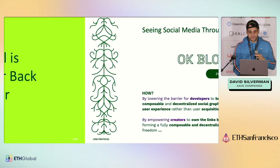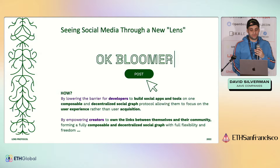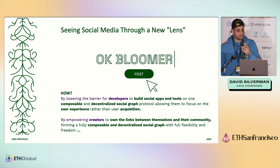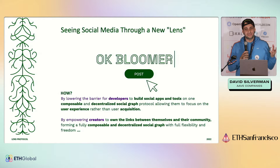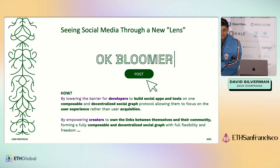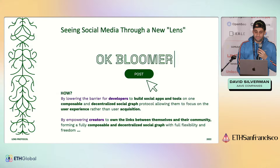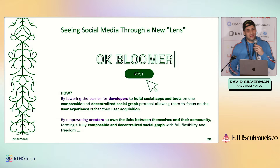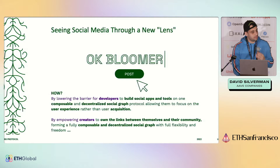In sum, Web3 Social is about bringing power back to the user. We're lowering the barrier for developers by making it easy to build social apps on a composable, decentralized social graph — so you focus on user experience, not customer acquisition. The name Lens is named after a plant, Lens Calaris, which fertilizes the soil allowing other plants to grow. Data generated on one app is available to another; as long as you're in the Lens ecosystem, everybody wins — it's a collaborative game, not zero-sum. Creators get to own the links between themselves and their community and move anywhere with ease.